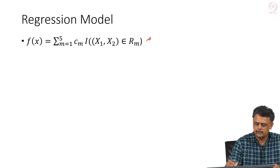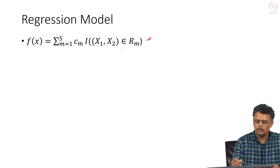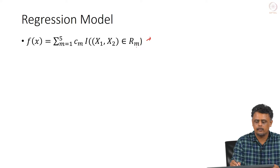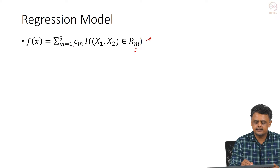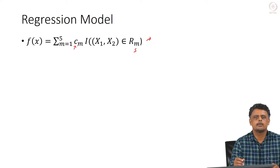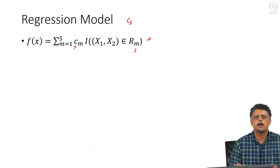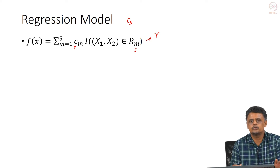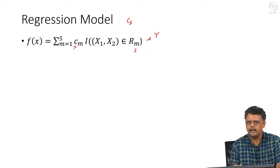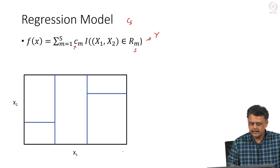This is the model which determines Y. What this formula says is that you consider the region in which X1 and X2 fall into — let us say it belongs to region 5. Here I is an indicator function, so it returns true for the region into which X1 and X2 fall. You assign a constant value C_M — let us say C_5 — and that constant value is returned as the output. The same output is assigned for all X1, X2 that fall into that particular region, for both test and training data.